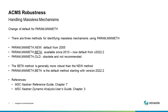Next is the massless mechanism method parameter. We have different methods for searching for massless mechanisms in a model. The original method has been relegated to the old method, and we have a new method and a beta method. The beta method is generally a little bit more reliable and robust, so we've made the default of this parameter the beta method. Some references discussing what a massless mechanism is, how to look for them, and the mathematics involved are listed.